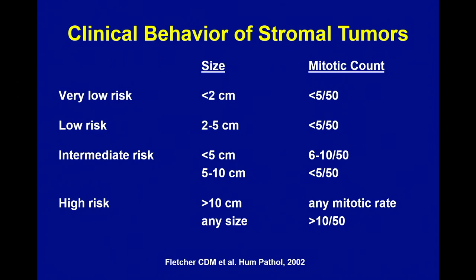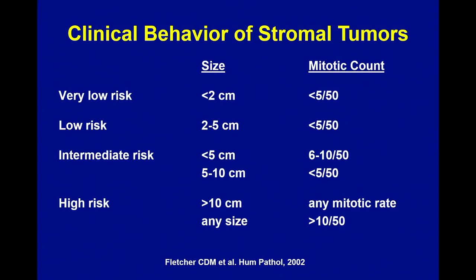Probably the most important article published in that Human Pathology edition was the first time we encountered a real risk assessment that all of you are now quite familiar with. Instead of calling tumors simply benign or malignant or of uncertain malignant potential, they now consider them either very low risk, low risk, intermediate risk, or high risk. This was based upon only two parameters: tumor size and mitotic counts. People were very excited about this because predicting behavior of GI stromal tumors was notoriously difficult, and if all you had to do was measure it and count mitotic figures, people thought, 'well, that's not too bad — plug it in and figure out what the risk is.'